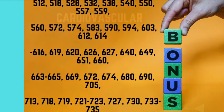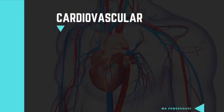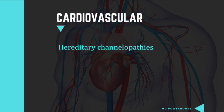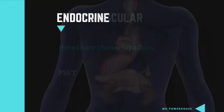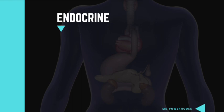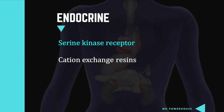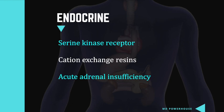In the cardiovascular system, they added hereditary channelopathies as well as PSVT. If you watched part one of this video, you know they added quite a bit for the endocrine system. Some more updates and changes include the addition of kinase receptors, cation exchange resins, acute adrenal insufficiency, and hypoglycemia.